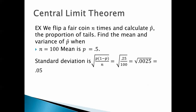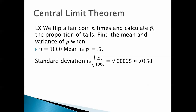When n equals 100, the mean of p-hat is still 0.5. The standard deviation is the same formula, but with 100 in the denominator instead of 10. So it's 0.25 divided by 100, which is 0.0025 under the square root, giving 0.05. And when n equals 1,000, the mean of p-hat is still p equals 0.5. The standard deviation is the square root of 0.25 over 1,000, which works out to be 0.0158.